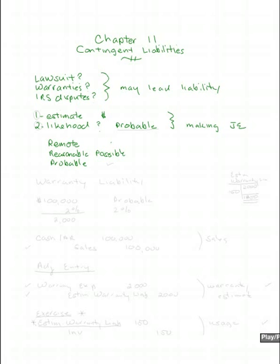The accounting literature discusses all three, and when you can estimate the amount of the liability, and when the likelihood of it being adjudicated against you is all the way to probable, is when you make the journal entry.